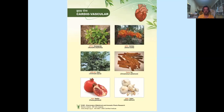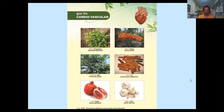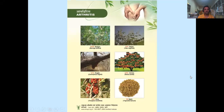For cardiovascular diseases, Sarpagandha, Ashoka, Arjun, Tej, Dadam and Lasun have been extensively used. For arthritis, Shigru (Moringa oleifera), Nagod (Vitex negundo), Guggul (Commiphora wightii), Saraka, Ashoka, Giloy (Tinospora cordifolia) and Methi have been extensively used in curing arthritis.